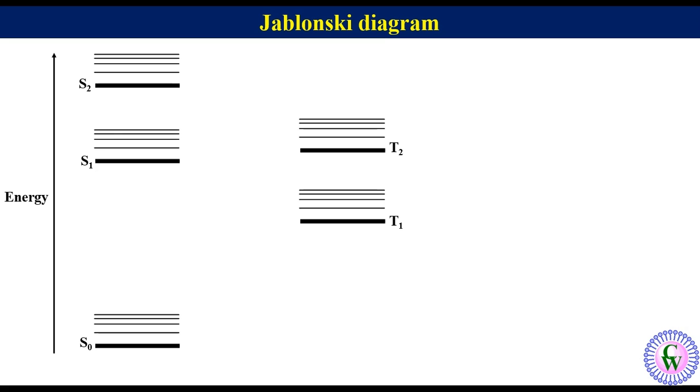As we know that a straight arrow represents a radiative process while a wavy arrow represents non-radiative process. Let's go through these processes one by one.